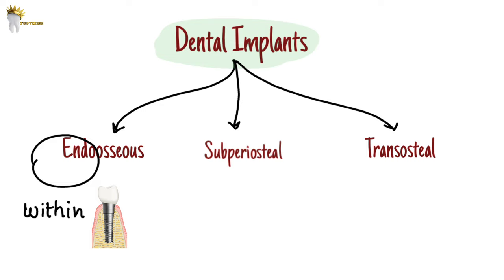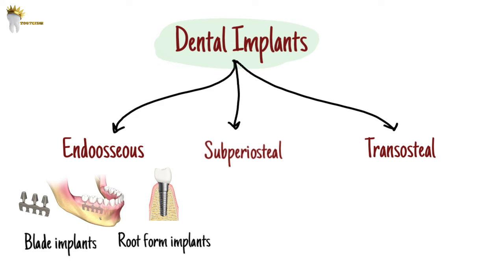Some examples are blade implants and root form implants. Blade implants are available as prefabricated in the shape of blades with an integrated abutment that emerges out of the soft tissues to support the prosthesis. The endosteal blade implant was introduced independently in 1967 by Dr. Leonard Linko.